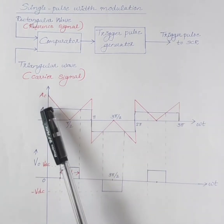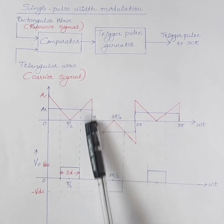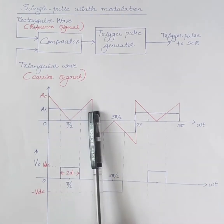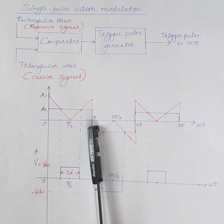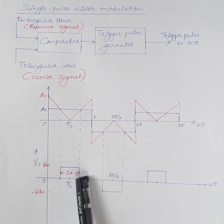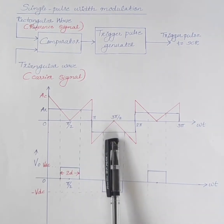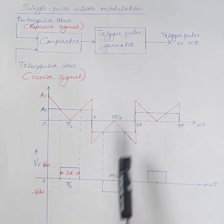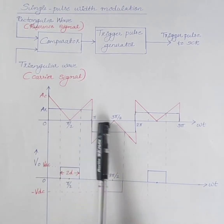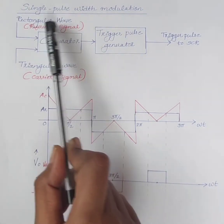Considering the waveforms: AR is the amplitude of the reference signal, and AC is the maximum amplitude of the carrier signal. The rectangular wave is compared with the triangular wave. When AR is greater than AC, an output pulse is obtained — that is, when the amplitude of the rectangular wave is greater than the amplitude of the triangular wave, an output pulse is obtained. During each half cycle, only a single pulse is obtained, hence the name single pulse width modulation. The output voltage is controlled by varying the pulse width.